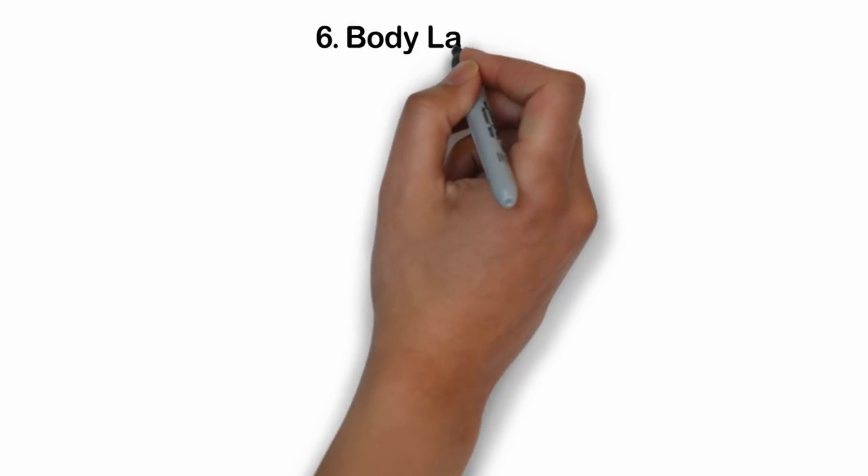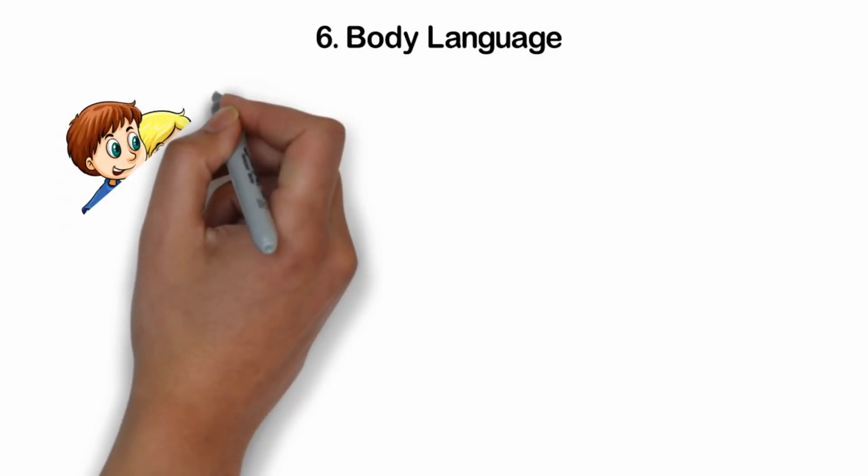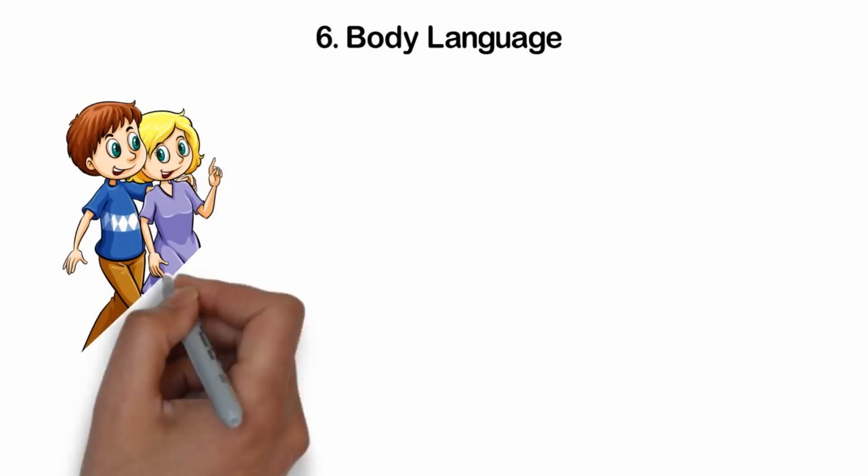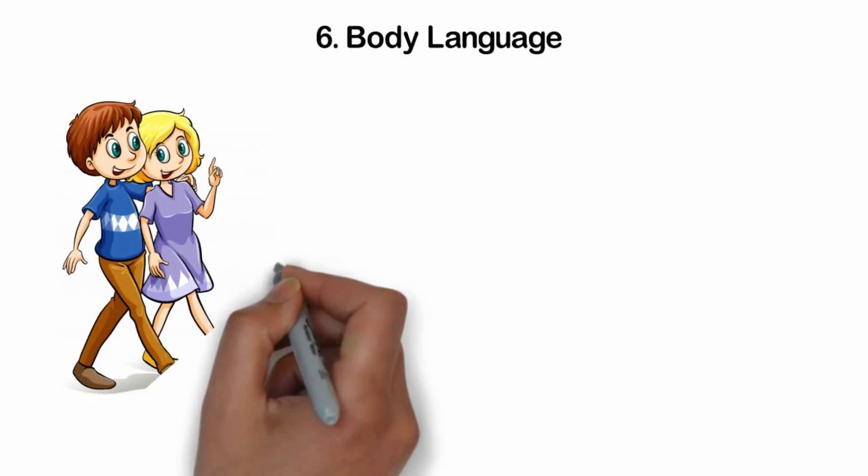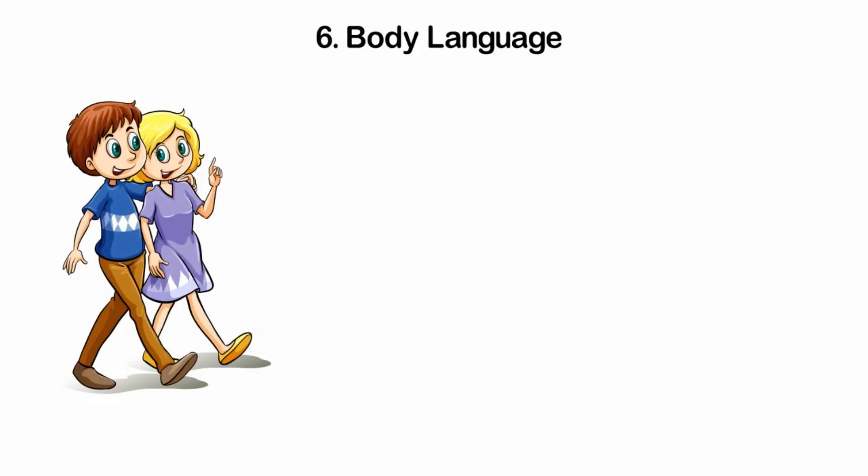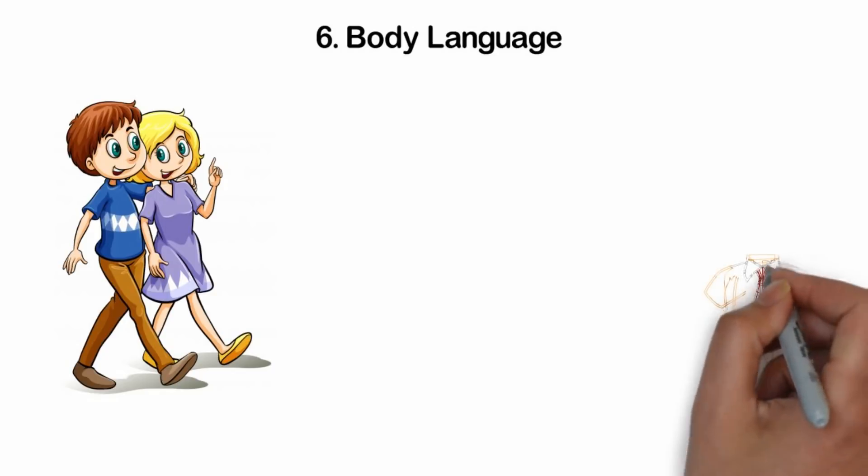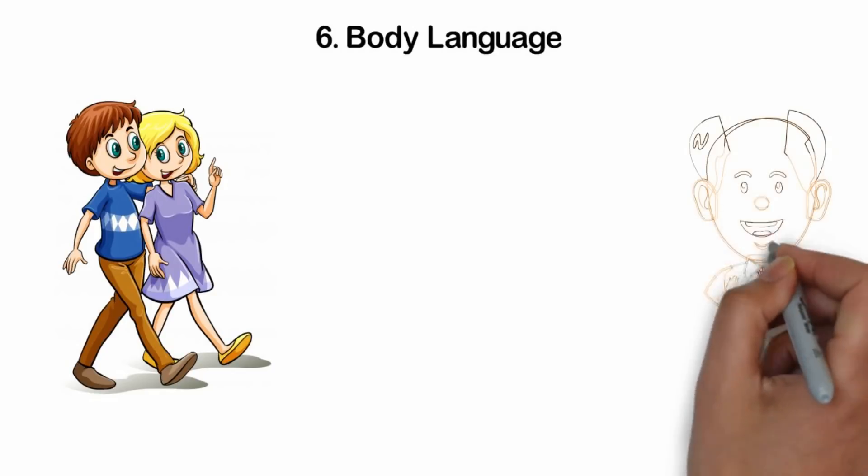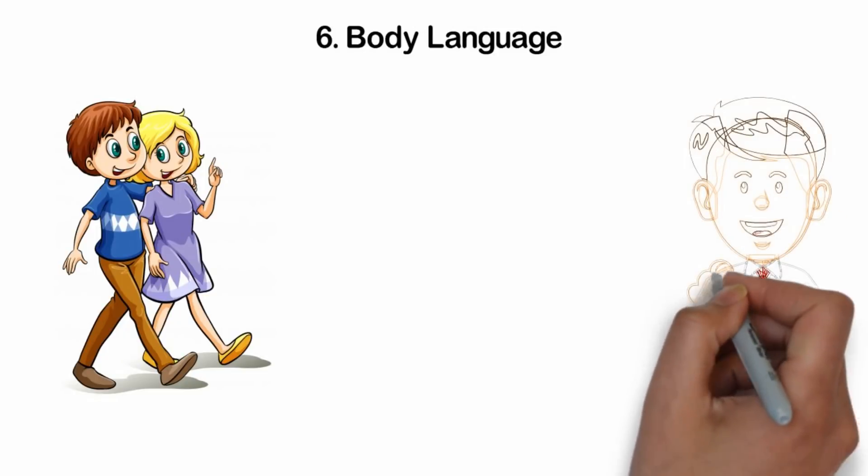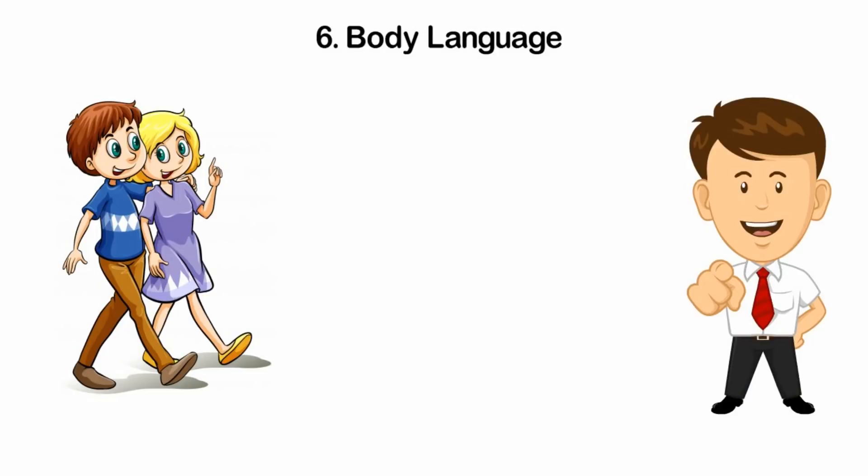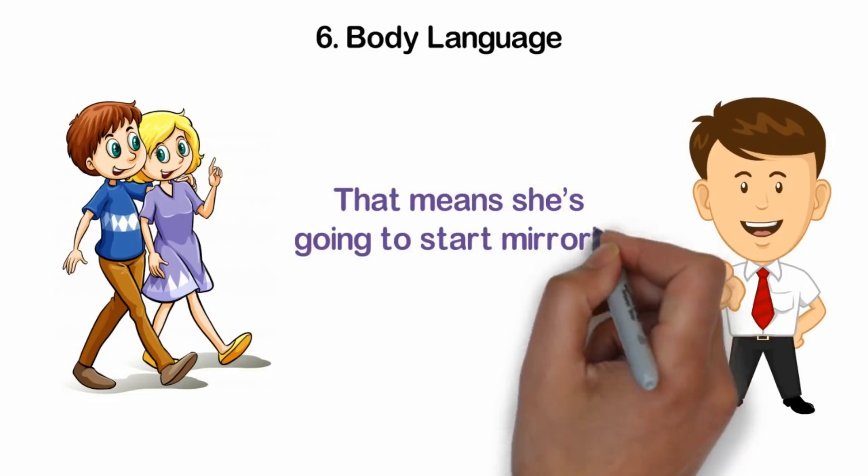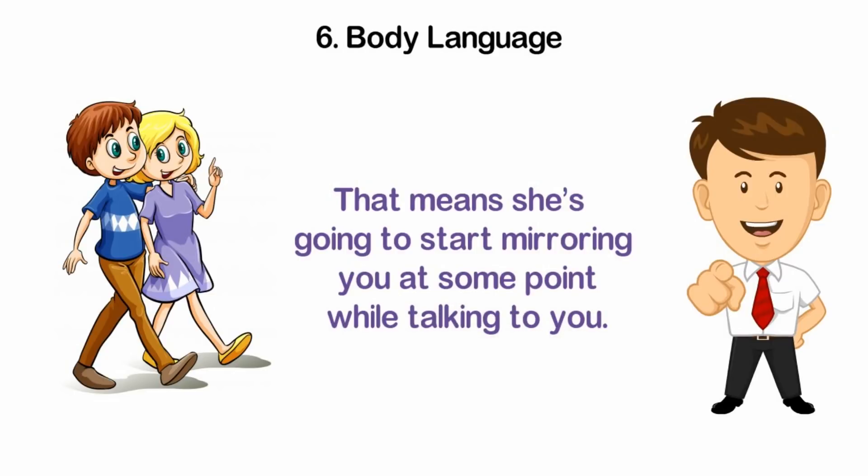Number six, body language. There's a change in her body language every time she sees you walk in. She might straighten up a little. Or is she suddenly checking her appearance? You see her fixing her hair in quick motions and readjusting her clothes. This isn't the most obvious thing to observe. You need to first see how she acts when she isn't aware you are looking versus when you are looking at her. You should also pay attention to her response to your body language. If she is into you, she's probably following all your moves. That means she's going to start mirroring you at some point while talking to you.